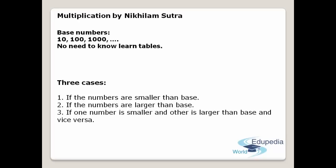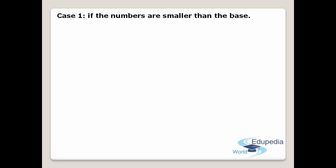Case 1: when the numbers to be multiplied are smaller than the base, we follow Case 1 procedure. Case 2: when the numbers are larger than the base, we follow Case 2 procedure. Case 3: when one number is smaller and the other is larger — whether the multiplicand is smaller and the multiplier is larger, or vice versa — we follow Case 1 procedure applied in Case 3. Now let us look at an example for Case 1.